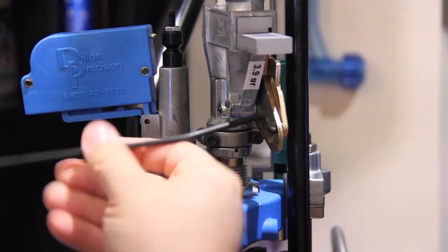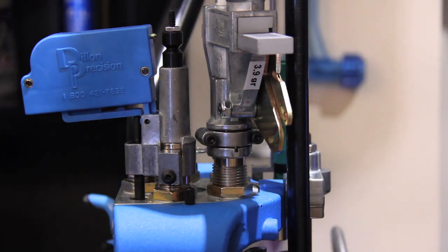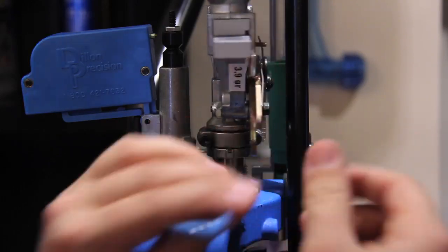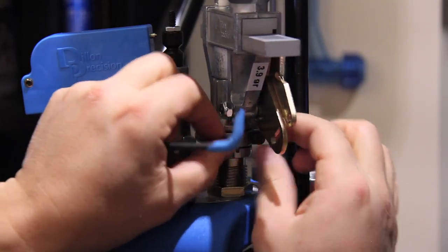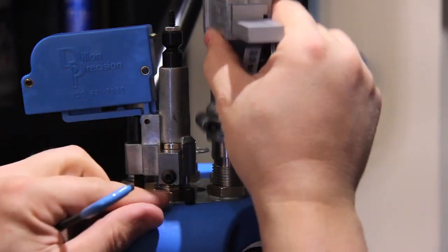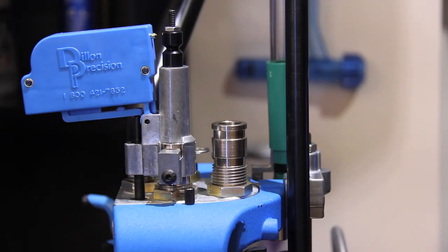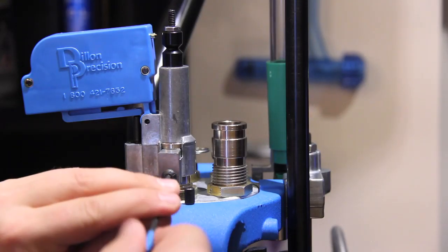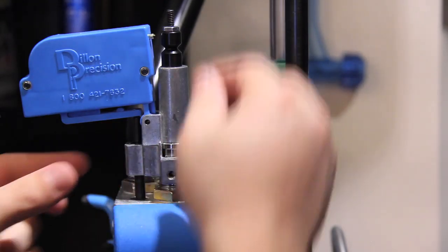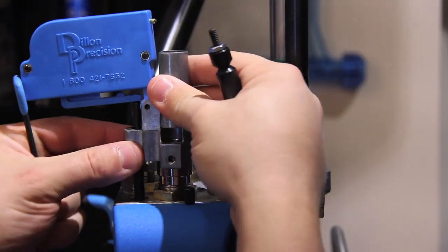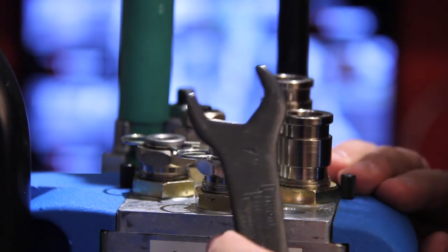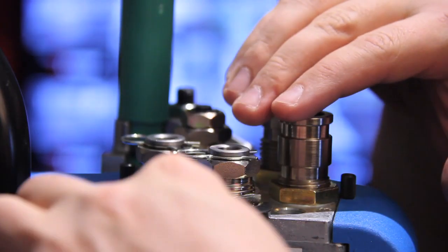First thing you want to do is take your rod out. We're going to disconnect the powder measure. Take that off, and we're going to take the power check off. The rod comes out. Now this is the trick with the electrical tape: you're going to take your wrench and loosen the ring lock, but at the same time hold the die so that it doesn't spin.